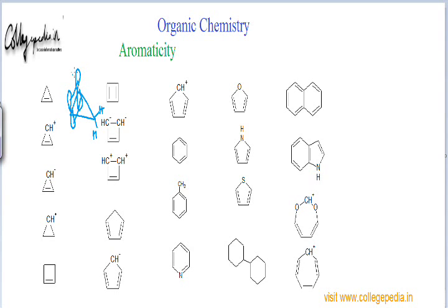If we see the orbital diagram of cyclopropene, there are two p orbitals and with the sideways overlapping of these two p orbitals we have a pi bond, but this third carbon does not have any p orbital — it has four sigma bonds. So this carbon does not have a p orbital into which electrons can move for cyclic uninterrupted delocalization. Because of this sp3 hybridized carbon, there is no uninterrupted cyclic delocalization, so the molecule is non-aromatic.